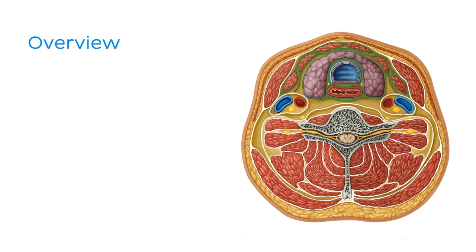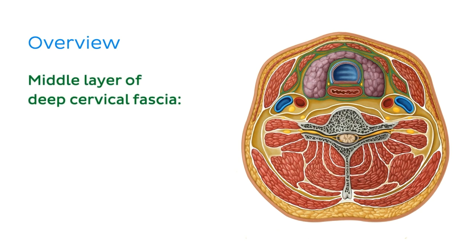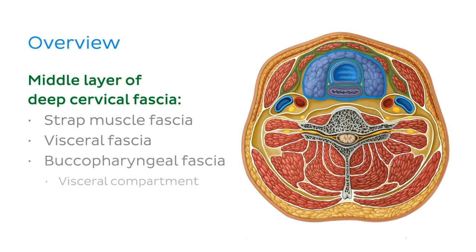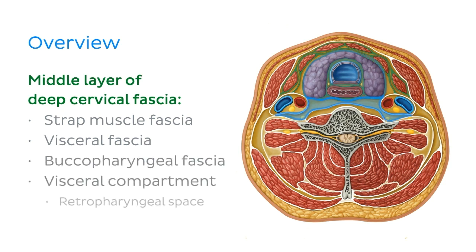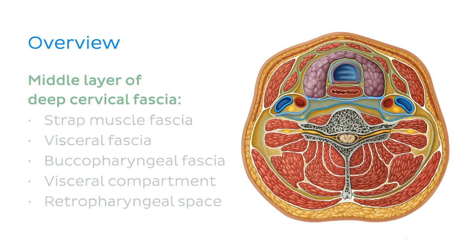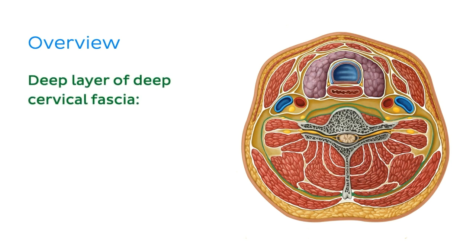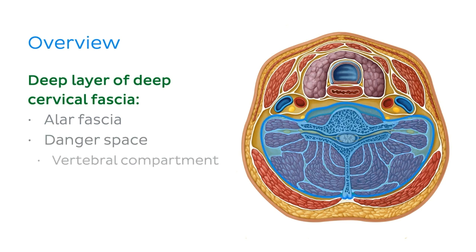We'll then move on to the middle layer of the deep cervical fascia, which is subdivided into the strap muscle fascia, the visceral fascia, the buccopharyngeal fascia, forming the visceral compartment, and the retropharyngeal space. We'll then tackle the deep layer of the deep cervical fascia, with special emphasis on one of its parts called the alar fascia, which contributes to the bounding of two cervical spaces: the danger space and the vertebral compartment.